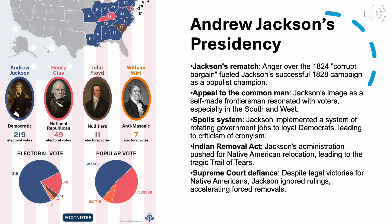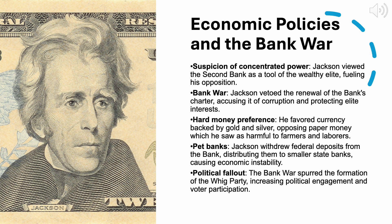Despite these legal victories, Jackson ignored the Supreme Court's decisions, famously stating: 'John Marshall has made his decision, now let him enforce it.' This defiance of the court led to the enforcement of the Treaty of New Echota in 1835, which mandated the removal of the Cherokees from their land. The forced relocation, known as the Trail of Tears, resulted in the deaths of nearly one-fourth of the Cherokee population as they were marched to Indian Territory under brutal conditions. Jackson's Indian removal policy set a tragic precedent for future dealings with Native American tribes, leading to their near-total displacement from the eastern United States.